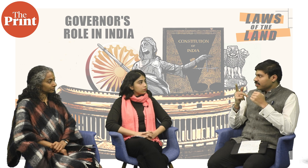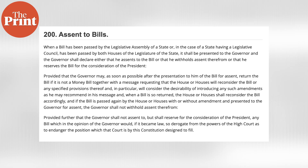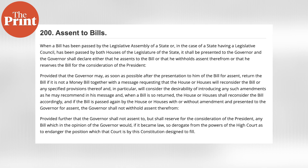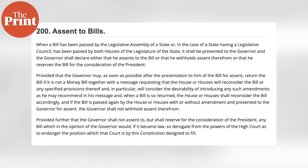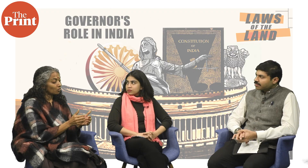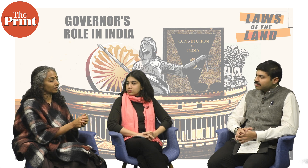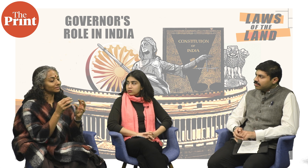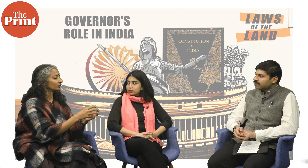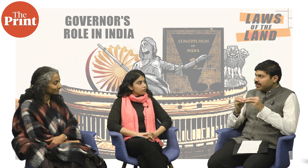The Punjab judgment is very important here. In Punjab's case, the governor did not even declare that he was withholding assent. The court said you have to declare either way — you have only three options under Article 200. Before touching on the Punjab judgment in detail, what exactly was the dispute? The issue involved an assembly session the governor did not approve of, and why he kept sitting on the bills.